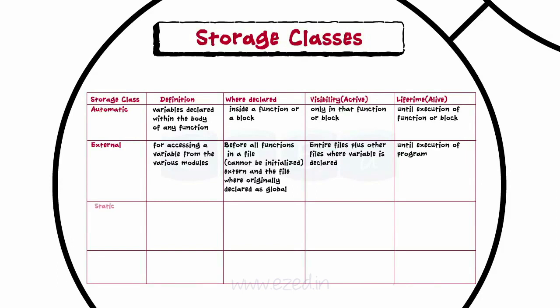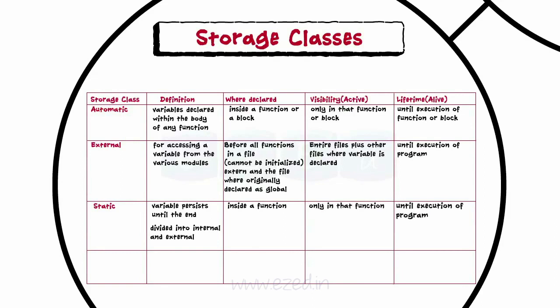The value of a static variable persists until the end of the program. Static variables are divided into internal and external static variables. A static variable is declared inside a function, visible only in that function, and its lifetime is global. Register storage class is used to allow fast access to variables. They are declared inside a function or a block, visible only in that function or block, and their lifetime is until the end of the function or block.